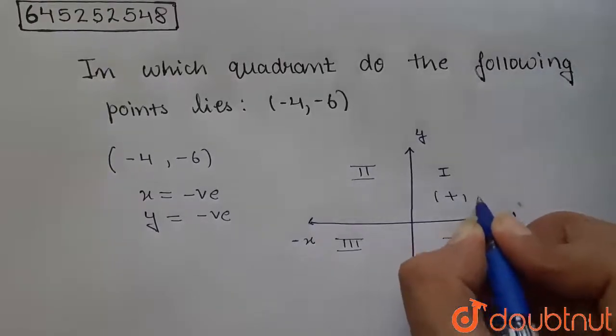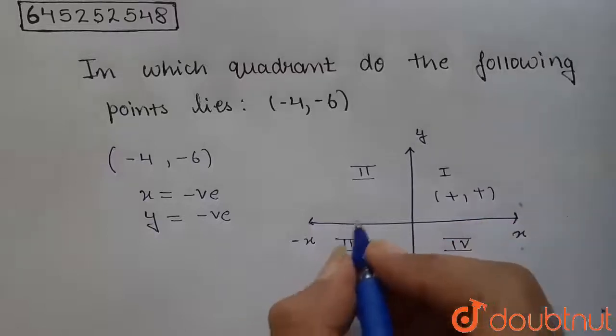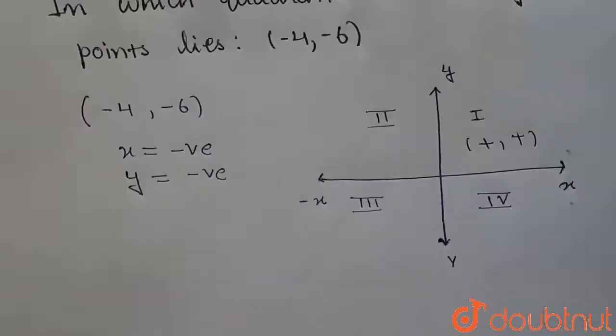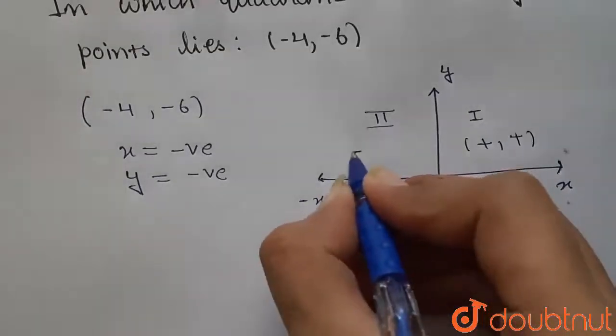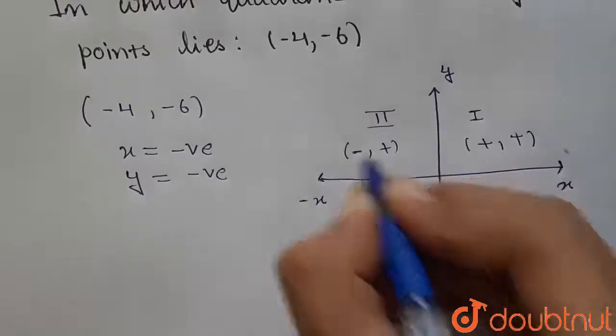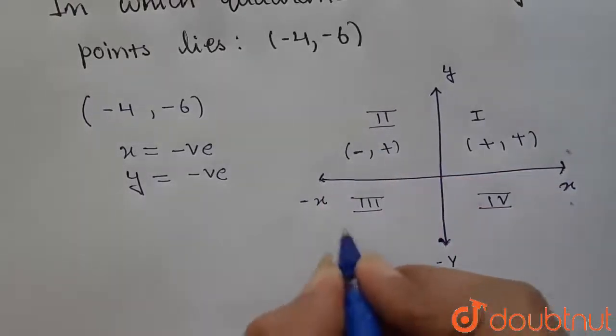In first quadrant, x is also positive and y is also positive. And in the second quadrant, we are having x as negative and y as positive. And in the third quadrant, we are having both negative.